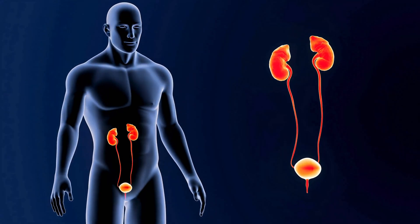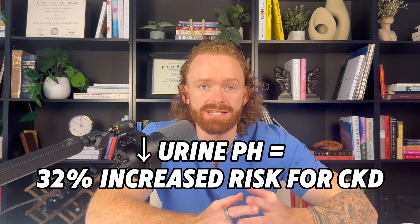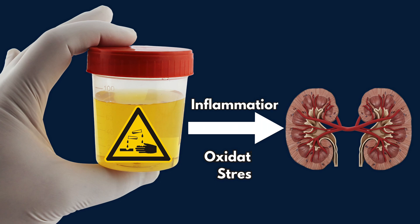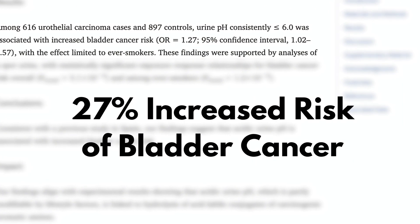A low urine pH is also associated with problems in the kidney and bladder, which makes sense because more acid is secreted out through the kidneys into the urine, which contacts the kidneys and bladder. This causes increased risk for chronic kidney disease — studies show a low urine pH of 5 to 5.5 compared to 6.5 to 7 is associated with a 32% increased risk for chronic kidney disease, largely due to inflammation and oxidative stress causing fibrosis or scarring within the kidneys. There's also an increased risk for bladder cancer — up to a 27% increased risk with a urine pH less than 6.0, as the acidic environment causes bad molecules to attach to DNA, which becomes carcinogenic.